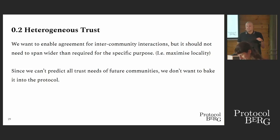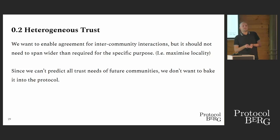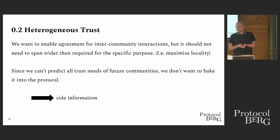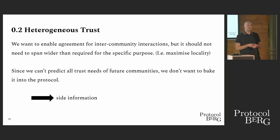Since we can't predict all the trust needs of future developments for applications and communities, we want to keep all of it out of band, because we want to build a protocol that we would like to use for a while. The more we put into the protocol, the less generally useful it will be. So we put all the trust information into side information, including whether consensus is provided at all or if it's just one person signing over some state.